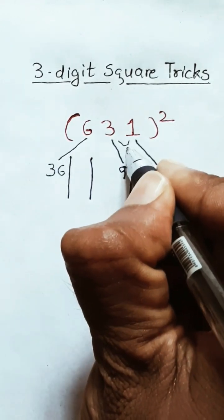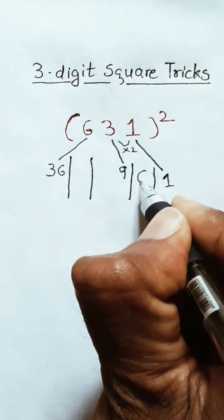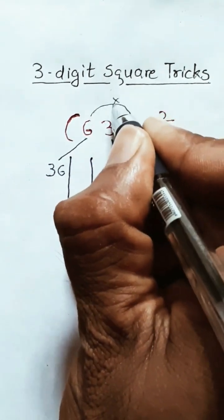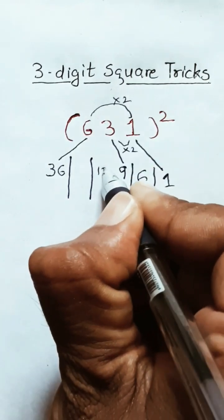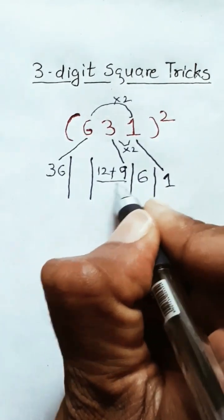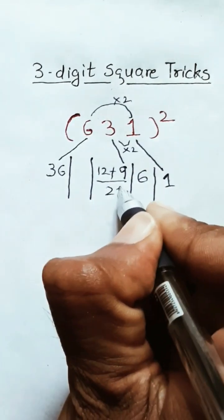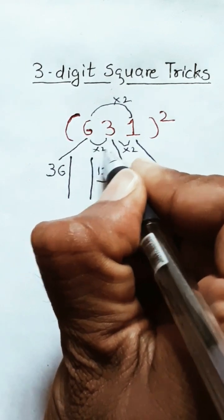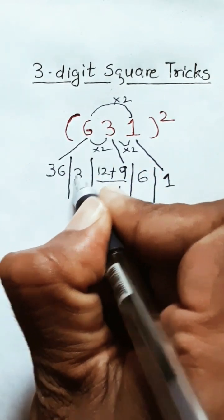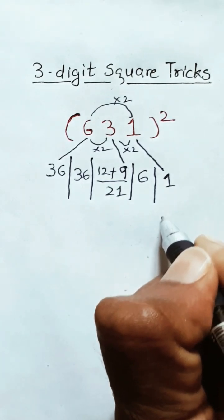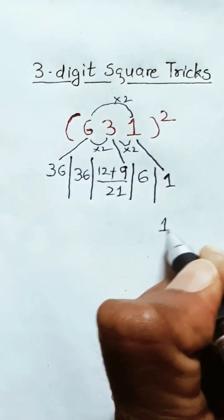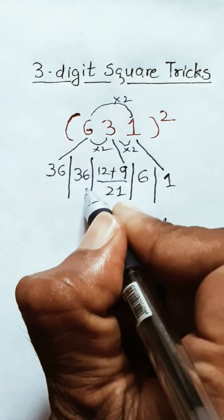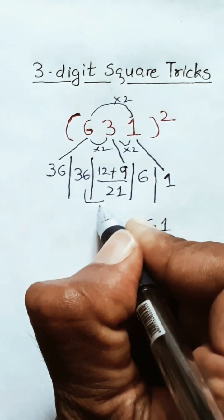Next, compute the product of adjacent digit pairs multiplied by two: 3 × 2 = 6; 6 × 1 × 2 = 12; 12 plus 9 = 21. Then 6 × 3 × 2 = 36 — write 6, carry 1, giving 2 plus 6 = 8.